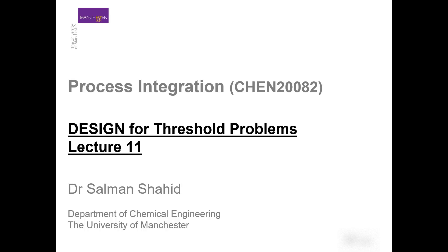Welcome back to lecture 11 part 2. In the first part of this lecture we identified a special type of process called a threshold problem. In a threshold problem we have a threshold delta T min below which we have no further heat recovery, as we would expect in a pinch problem as we go down to a low delta T min. Also at this low delta T min we have no further change in the utility requirement. The question is whether we need to consider different design techniques for our heat exchanger network design and heat recovery calculations in these threshold problems.